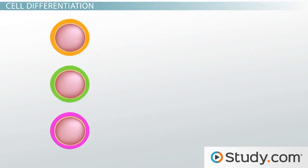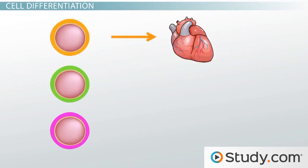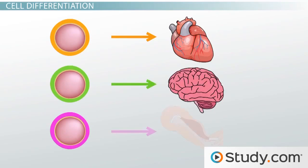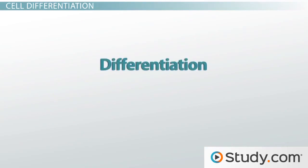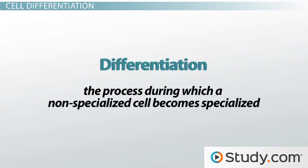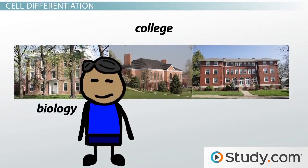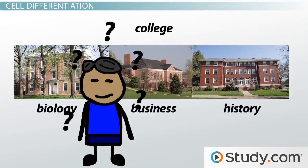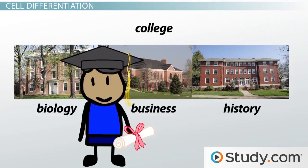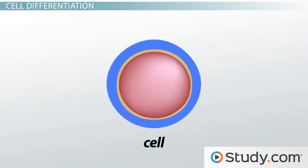All of your cells have their own chosen destiny, kind of like a chosen career path. Some are chosen to become heart cells, others brain cells, or muscle cells, and so on. This process is called differentiation. Differentiation is the process during which a non-specialized cell becomes specialized. You can think of it like going to college without a clue of what you want to do in life, and coming out with a degree in biology, business, art, or history. You went in unsure of your path and came out with a specialized degree that will shape the rest of your career.